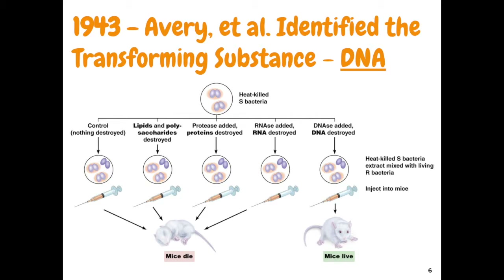They took heat-killed S bacteria plus living R bacteria. In one experiment they injected the mixture into a mouse — the mouse died as expected. Then they destroyed the lipids and polysaccharides from the heat-killed S bacteria. If those molecules were responsible for allowing the bacteria to reproduce and kill the mouse, destroying them should let the mouse live. But the mouse died anyway.